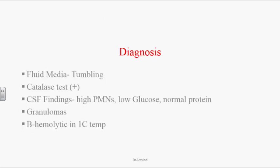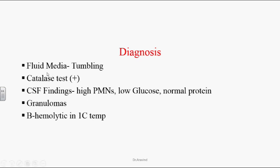Diagnosis: Diagnosis can be done in fluid media by observing tumbling motility. These organisms are catalase positive. In cerebrospinal fluid, we can see an increased number of PMN cells, low glucose, and normal protein levels. Granuloma cells can be seen inside the CSF as well as inside the bloodstream. These organisms are beta-hemolytic at low temperatures.